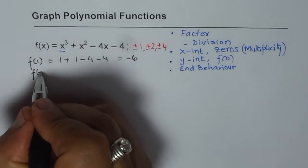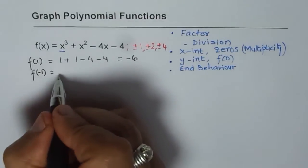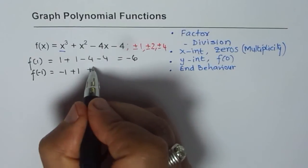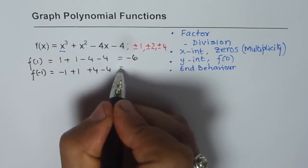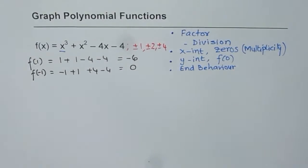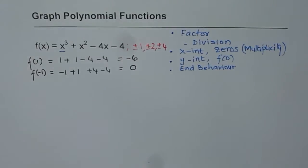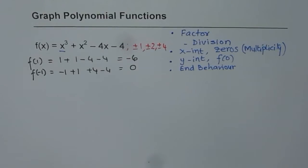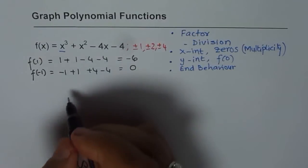How about minus 1? f(-1) will be minus 1 plus 1 plus 4 minus 4, which gives me 0. So lucky to get in the second trial. So at minus 1 we have a zero. So now we can do long division and find out the other factors.